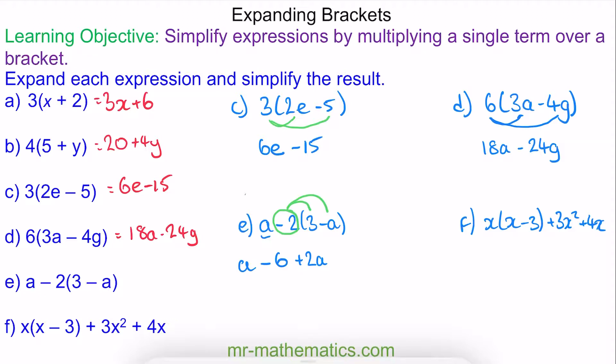A common misconception is to forget to multiply the a term by the negative 2. And now we can simplify this expression by collecting the a terms together. So we have 3a minus 6.